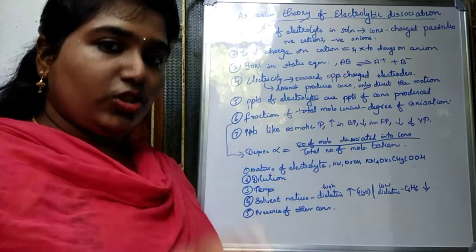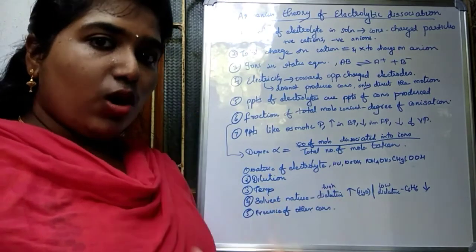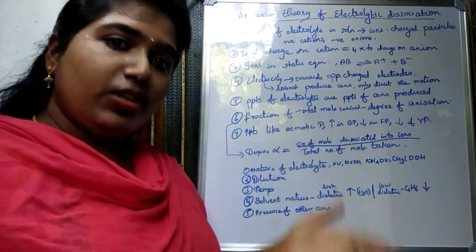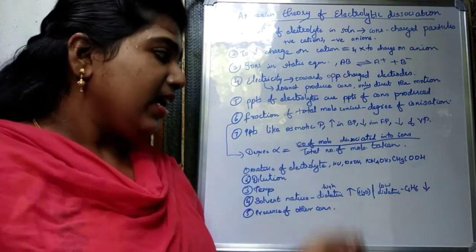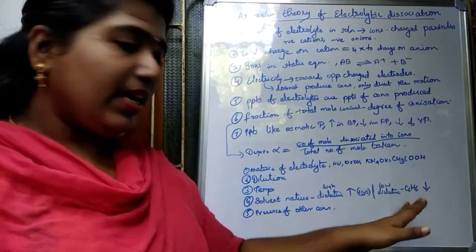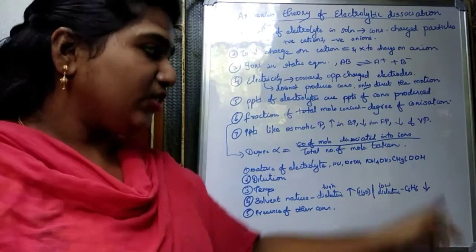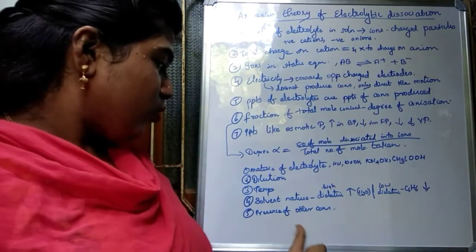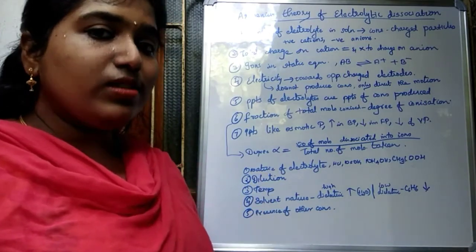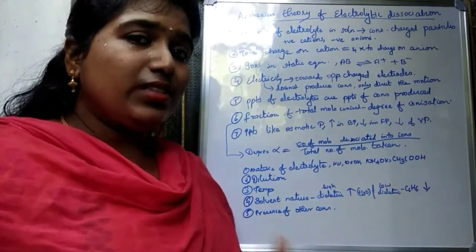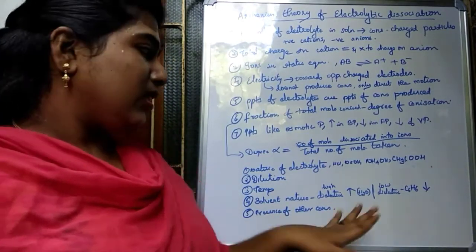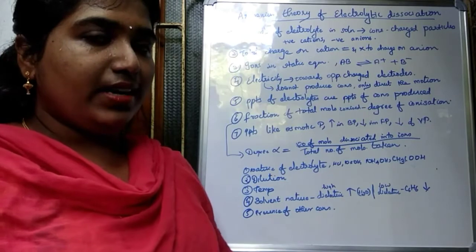The fourth factor is the nature of the solvent. If the solvent is a high dielectric solvent like water, the degree of ionization increases. If we take a solvent with low dielectric nature like benzene, the degree of ionization decreases. The fifth factor is the presence of other ions or impurities, which lowers or depresses the degree of ionization.